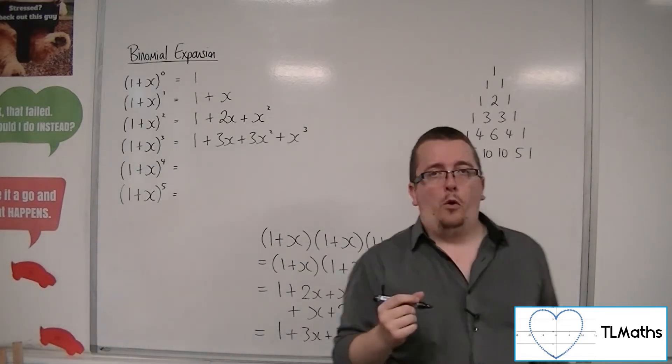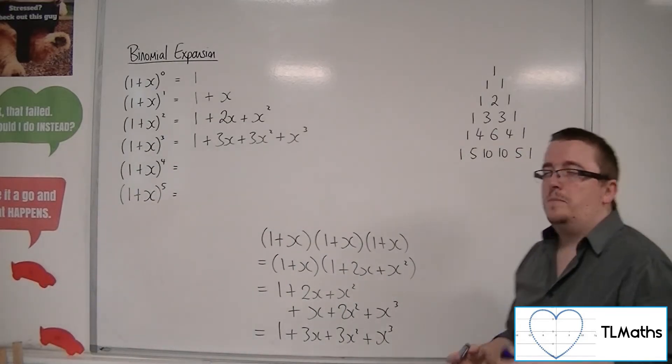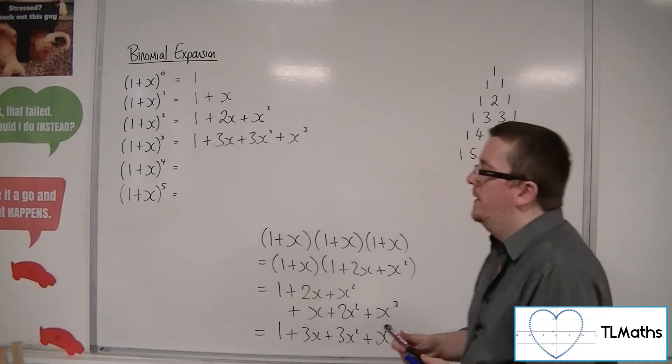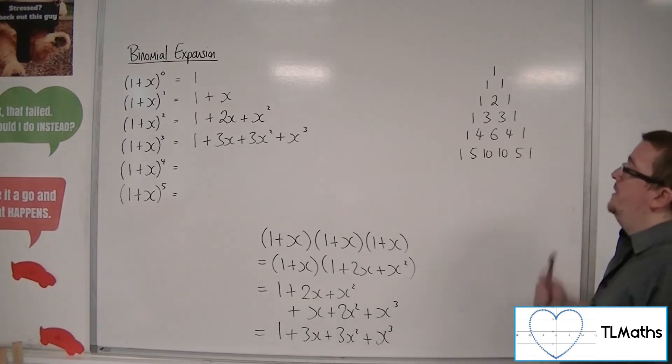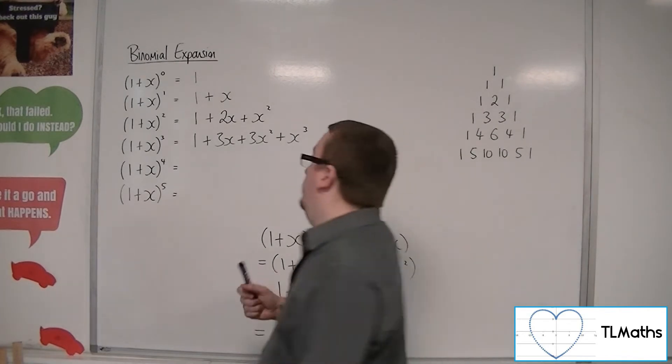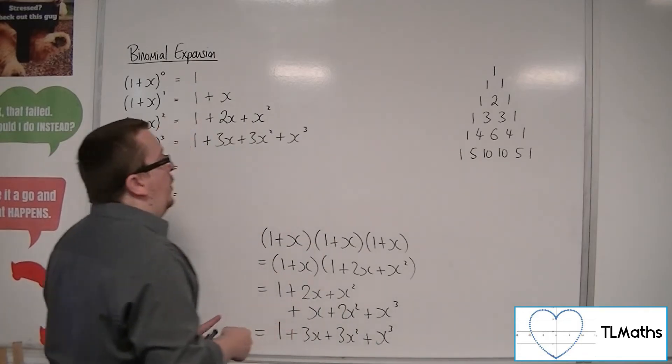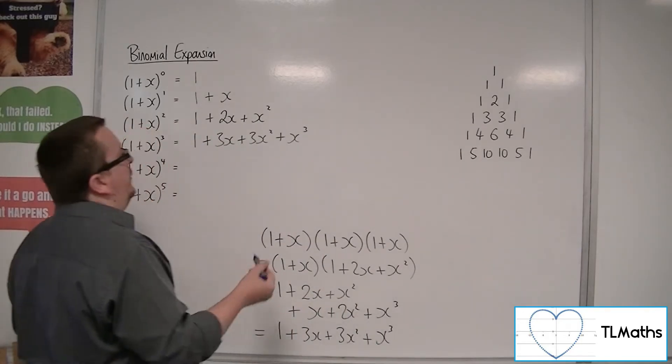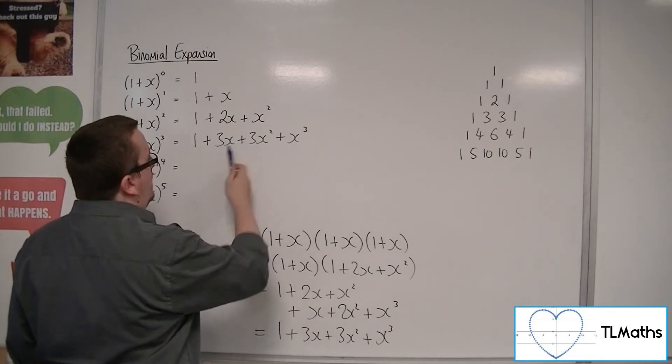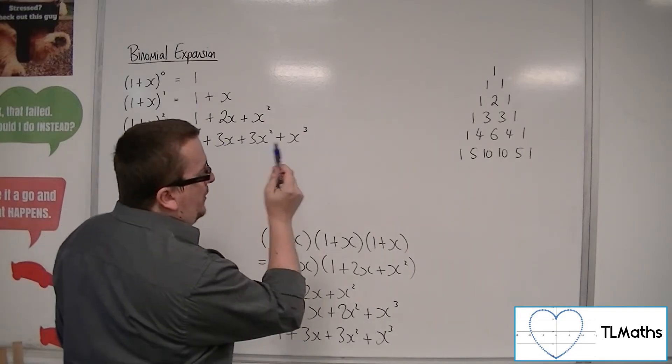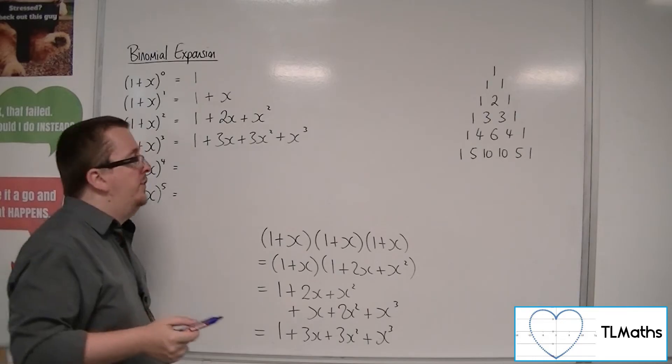So at this point, can we see any pattern emerging? Now I've written up Pascal's triangle here for a reason.